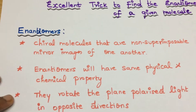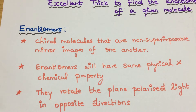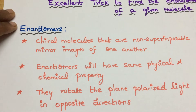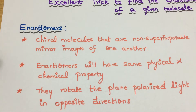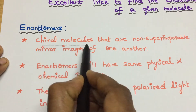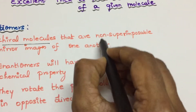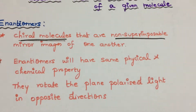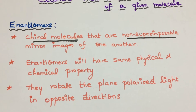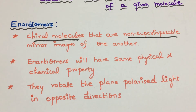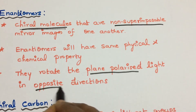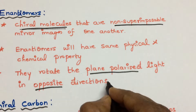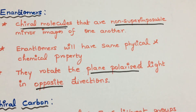So first, what is an enantiomer? Enantiomers are chiral molecules that are non-superimposable mirror images of one another. I'll explain what chiral molecules and non-superimposable mirror images mean. Also, enantiomers have the same physical and chemical properties — the difference is that they rotate plane-polarized light in opposite directions. The magnitude is the same but the direction is opposite.